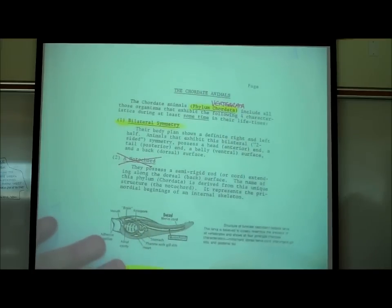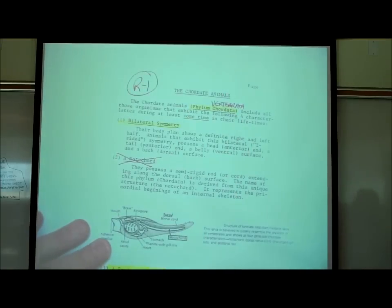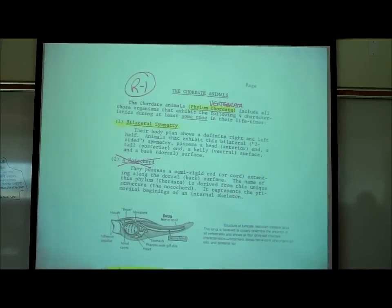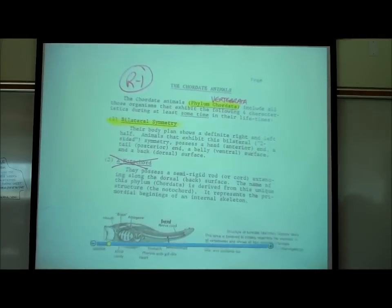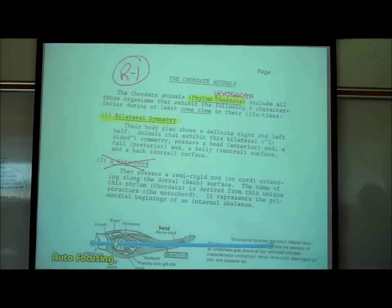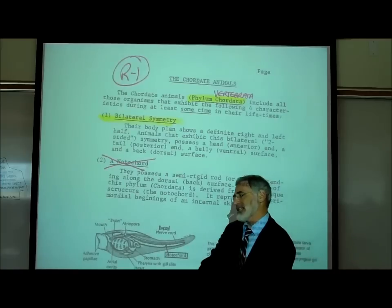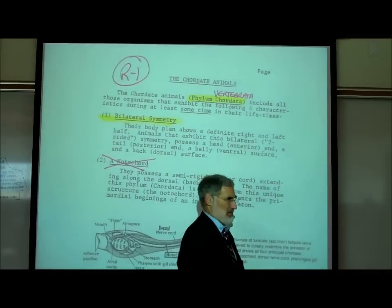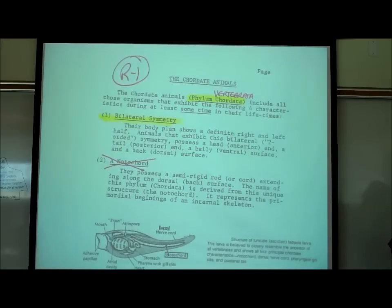On page R1, the chordate animals are also known as the vertebrate animals. This is the last phylum — phylum vertebrata. We are now covering the last phylum of the animal kingdom. This is the phylum of animals we are most familiar with.